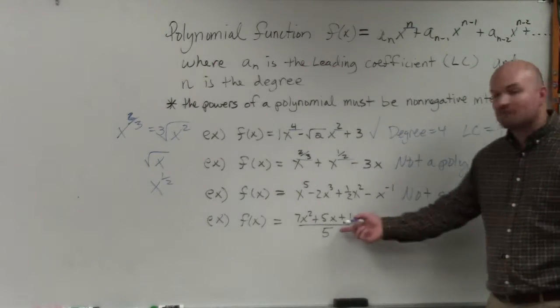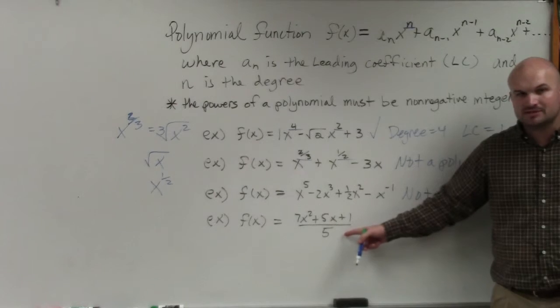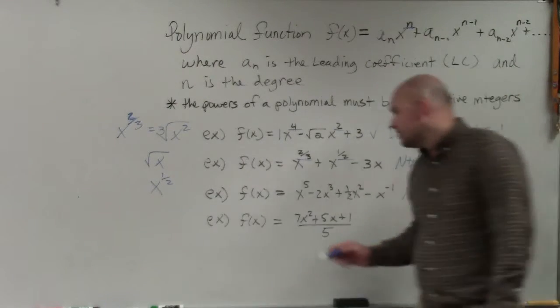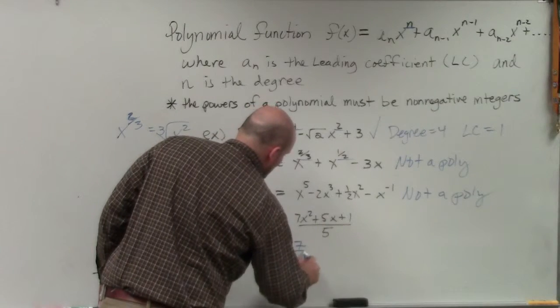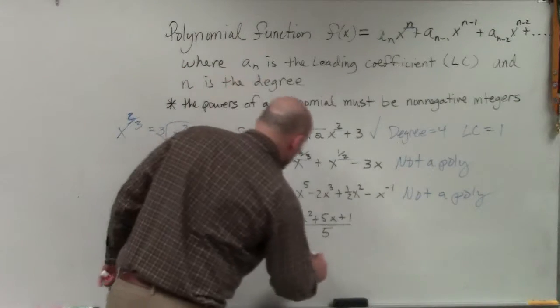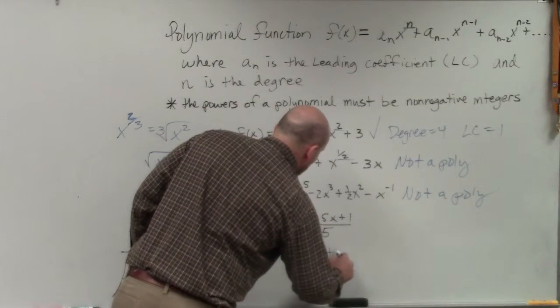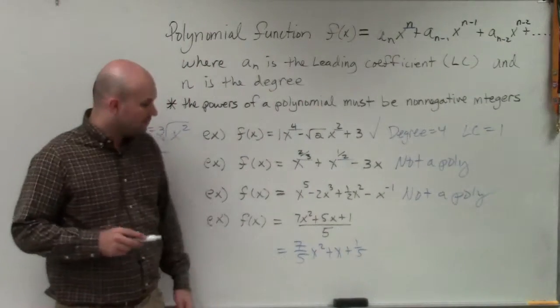And the last one, here's a fraction. But is there any denominator in there? Is there any variable in the denominator? No. No. So actually, this is, remember that 5 divides into all of those terms. So that's really 7/5 x squared plus x plus 1/5. Because the 5 is divided to 1.